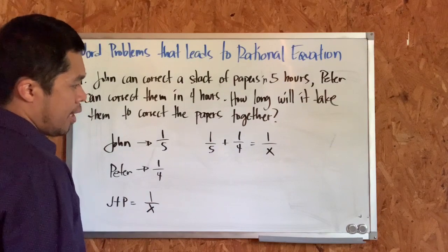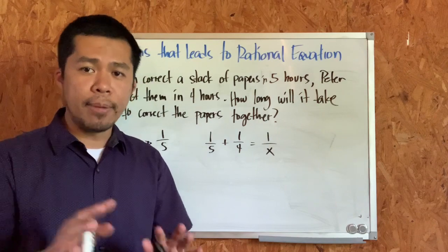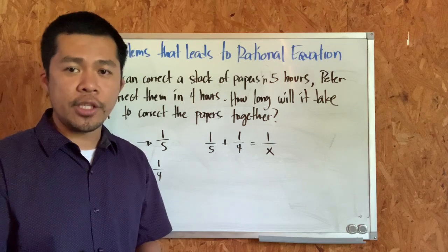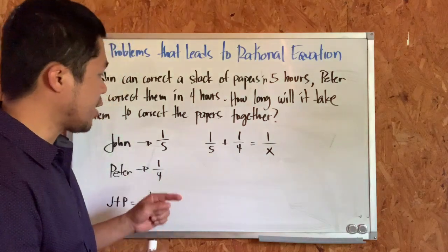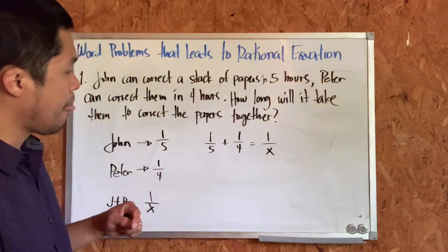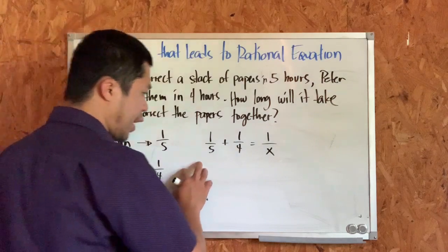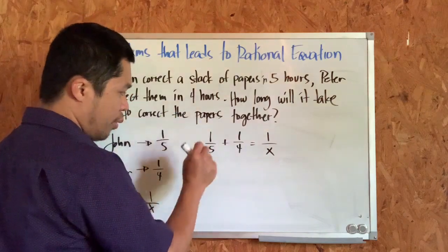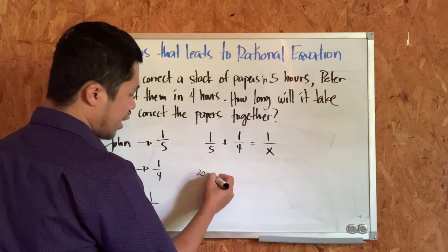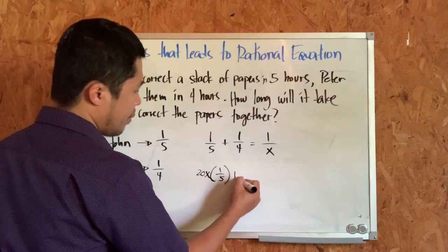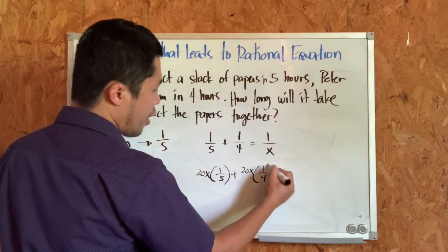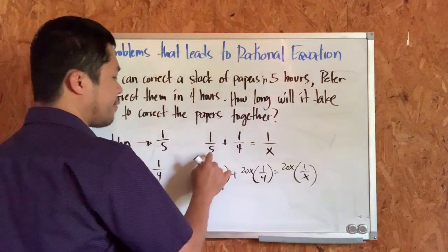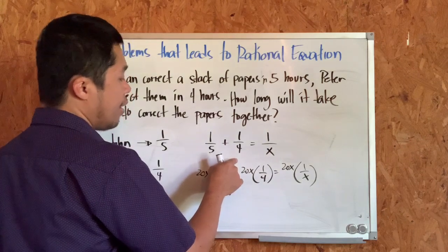The first step in solving a rational equation is to eliminate the denominators by multiplying each term by the LCD of the denominators. Since 5, 4, and x are relatively prime, we multiply everything by 20x — that is, 5 times 4 times x. So we get: 20x times 1/5, plus 20x times 1/4, equals 20x times 1/x.